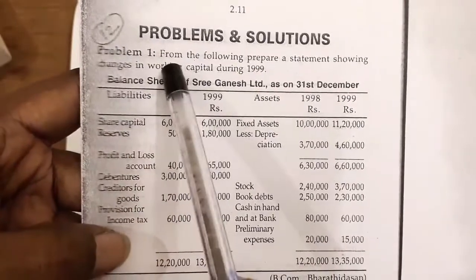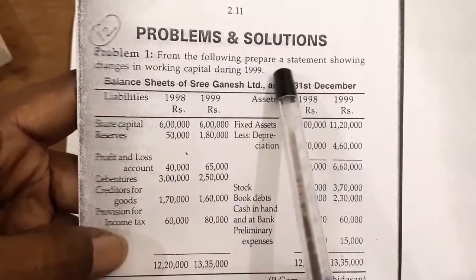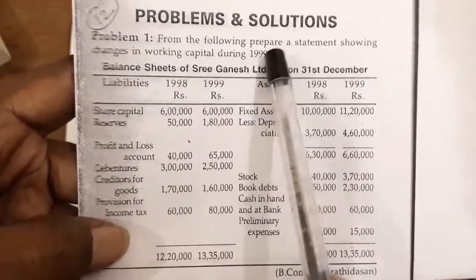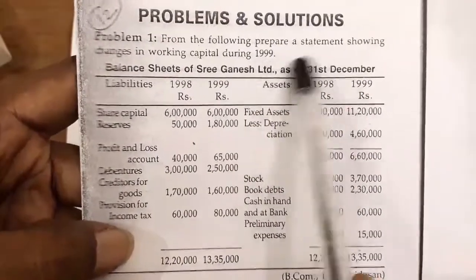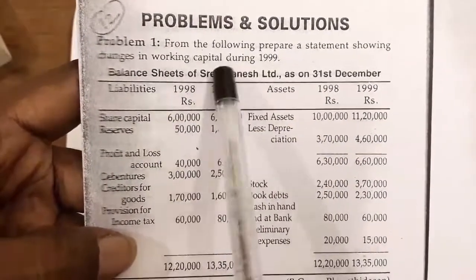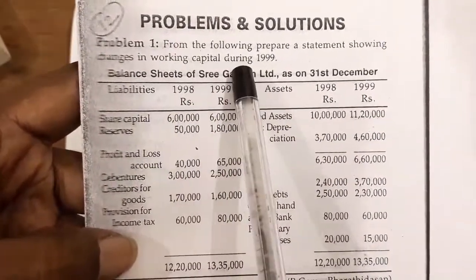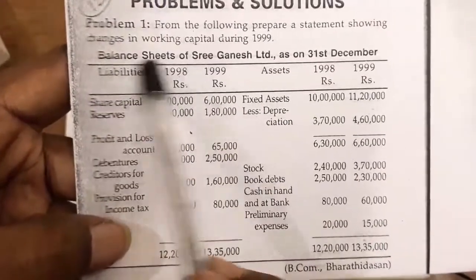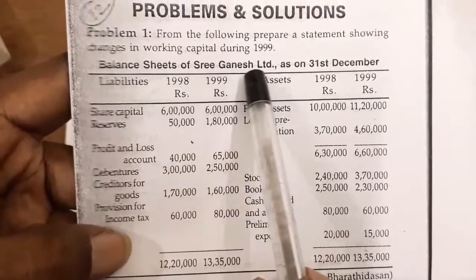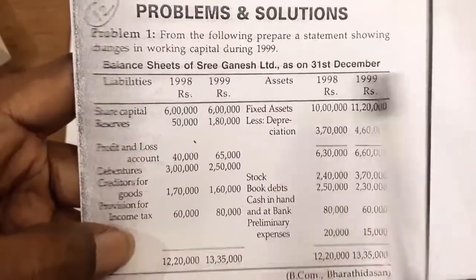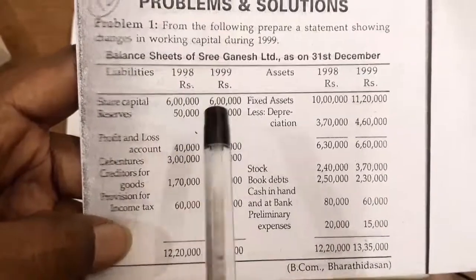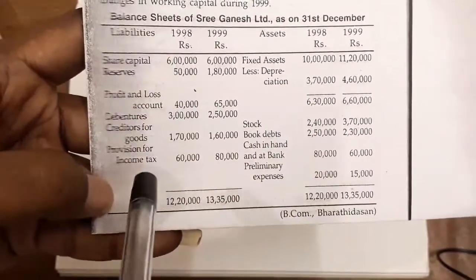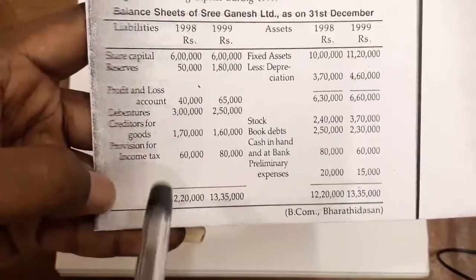We will talk about the following previous statement — changes in working capital during 1999. We will look at the balance sheet of Ganesh Ltd. as of 31 December, and from that we will collect and prepare a new working capital statement.